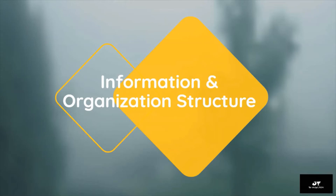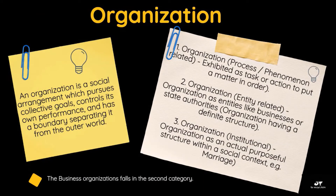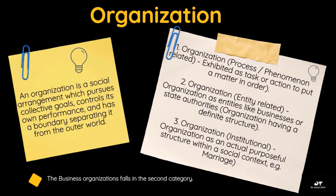Let us discuss various organization structures and information requirements. An organization is a social arrangement which pursues collective goals, controls its own performance, and has a boundary separating it from the outer world. Organization is categorized in three ways: first, process or phenomenon related, exhibited as task or action; second, entity related — organizations like businesses or state authorities having a definite structure; and third, institutional organizations with an actual purposeful structure within a social context, such as a marriage. From a management perspective in modern business, a business organization falls in the second category.